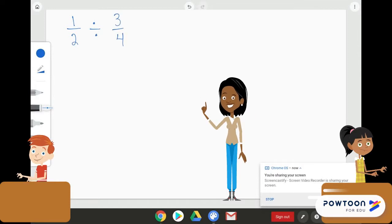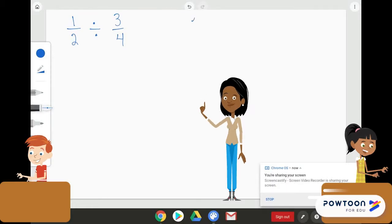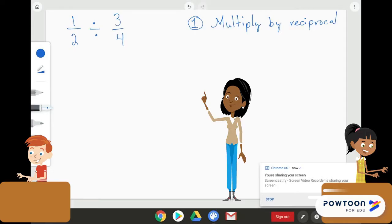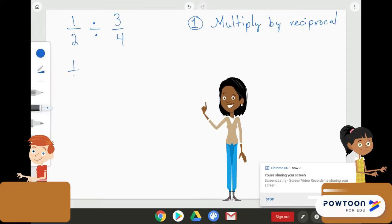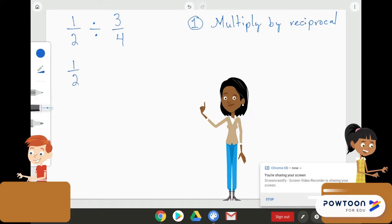Since these are both fractions, we don't need to convert to improper fraction. So, our first step here is going to be multiply by the reciprocal. Remember, some people call that keep, change, change. We're going to leave the first fraction, 1 half, as it is. We're going to change the division sign to multiplication sign. And the reciprocal of 3 fourths is 4 thirds.